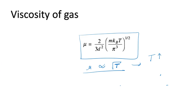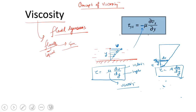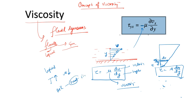In the case of a liquid, as we increase the temperature, the viscosity decreases. You must have seen this with oil — when you heat it, it becomes less viscous and its flowability increases. This happens because the interatomic bonding between molecules weakens as heat is applied.